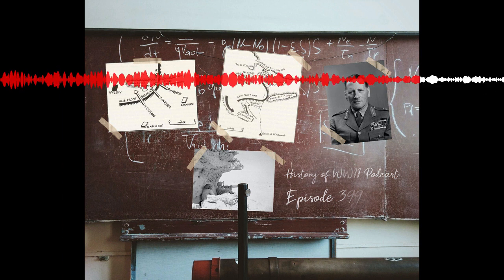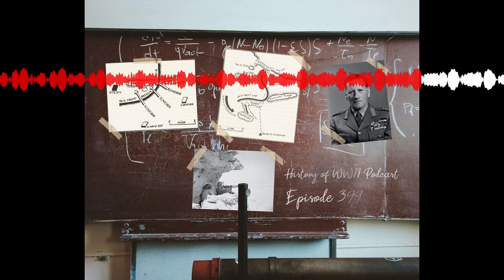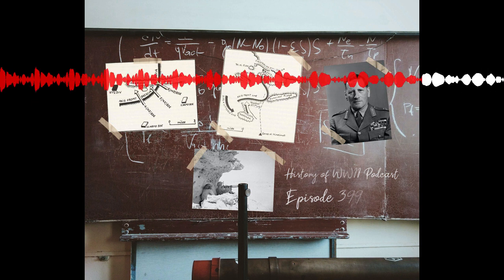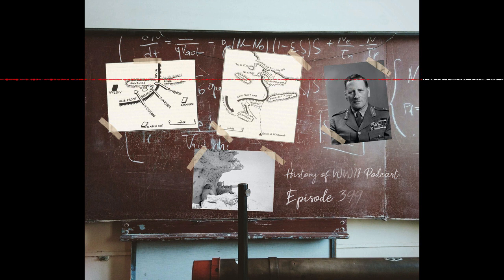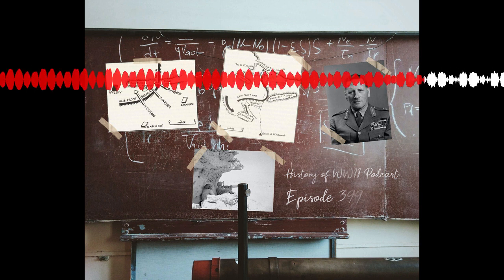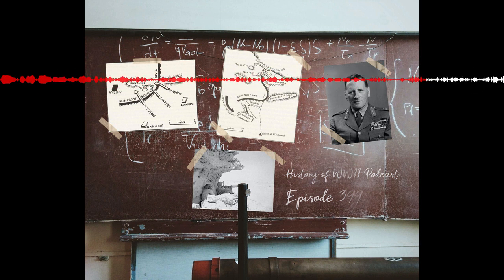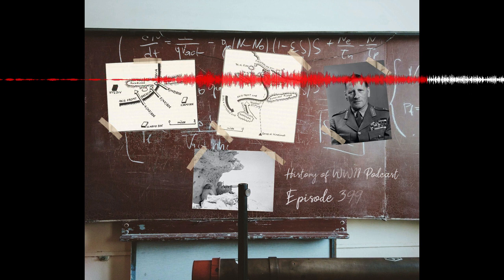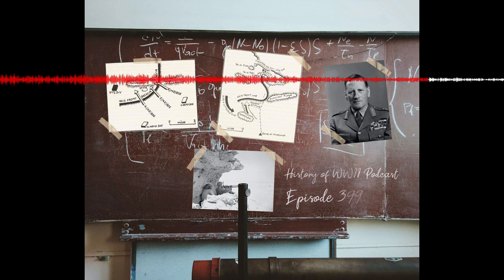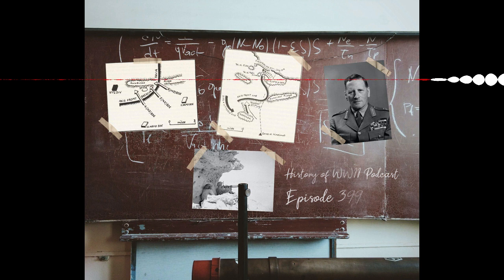When Rommel heard of the two collapsed Italian divisions, his first thought went to his now vulnerable center. There was nothing for it but to counterattack. So Rommel took bits from his three mobile divisions and gave them to General Walter Nehring, commander of the Afrika Korps, and told him to take back that ridge. That same afternoon, July 14th, at 5 p.m., Nehring's counterattack got underway.